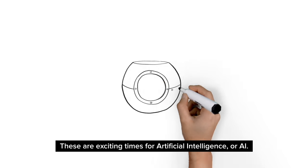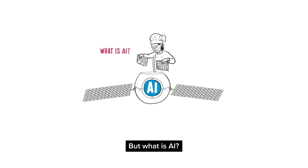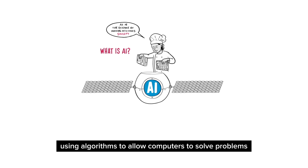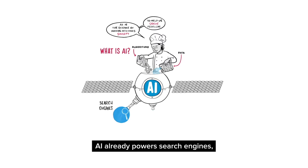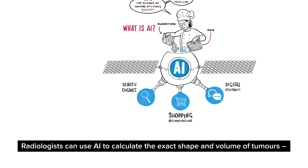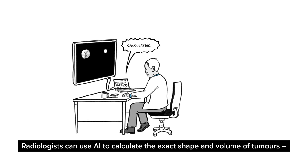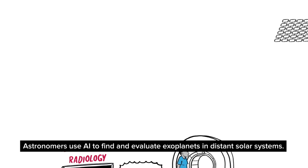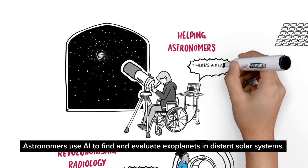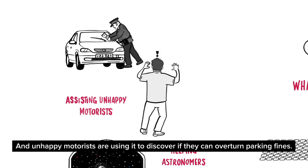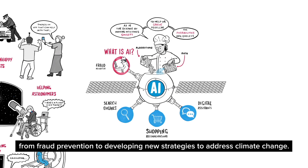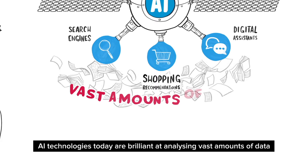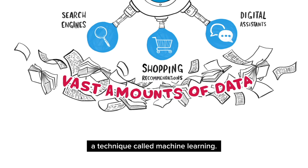These are exciting times for artificial intelligence, or AI. But what is AI? AI is the science of making machines smart, using algorithms to allow computers to solve problems which used to be solved only by humans. AI already powers search engines, online shopping recommendations, and digital assistance. Radiologists can use AI to calculate the exact shape and volume of tumours, revolutionising treatment. Astronomers use AI to find and evaluate exoplanets in distant solar systems. AI technologies today are brilliant at analysing vast amounts of data to learn to complete a particular task — a technique called machine learning.